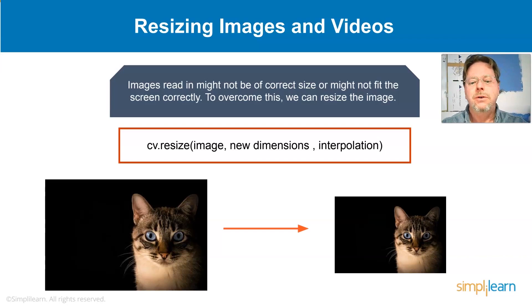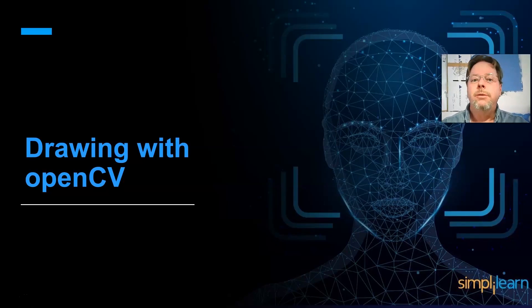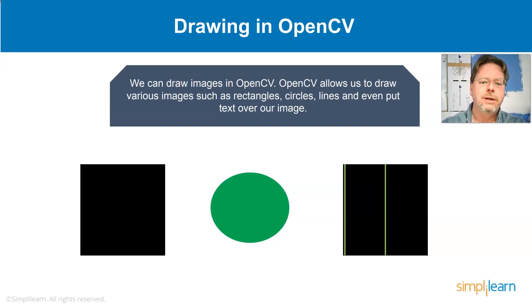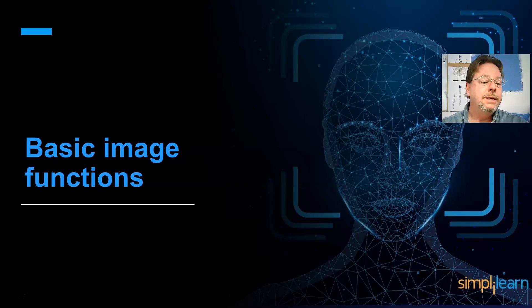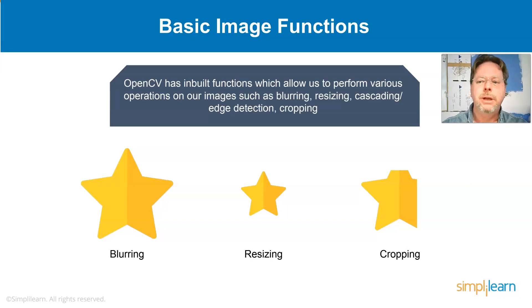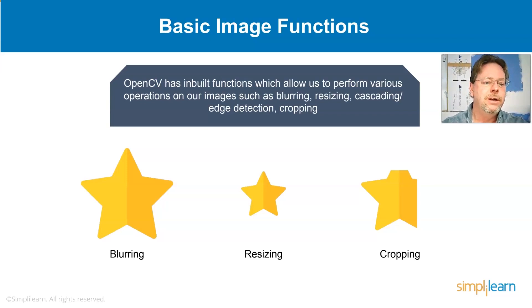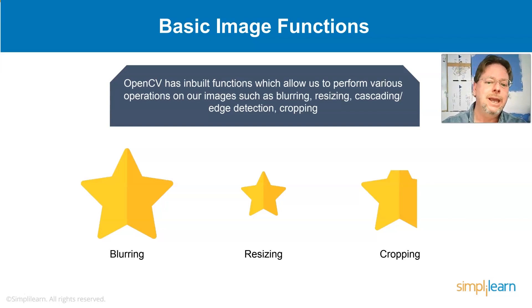We can also draw images in OpenCV. It allows us to draw various things like rectangles, circles, and lines, and add text to images. OpenCV has built-in functions to perform various operations on images such as blurring, resizing, cascading, edge detection, and cropping. There's also motion detection in videos. For example, blurring can take an image and blur it slightly, and cropping is easy — you can do face cropping for a web page.